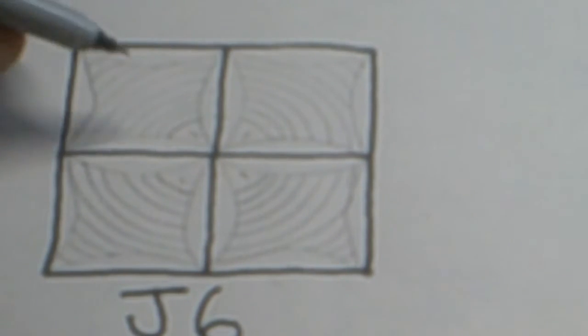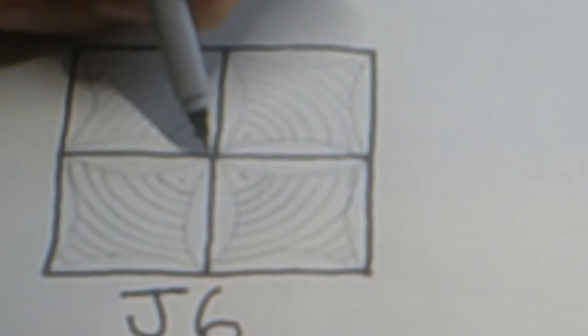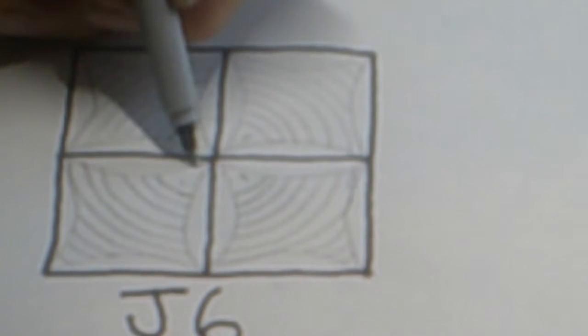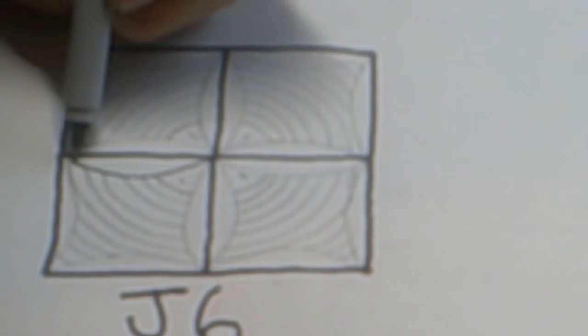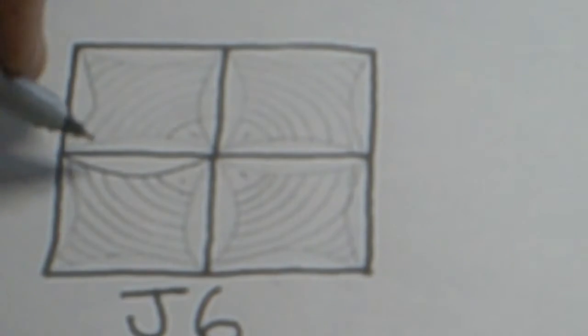In each one of these squares we're going to draw a shallow bow shape on each of the sides.